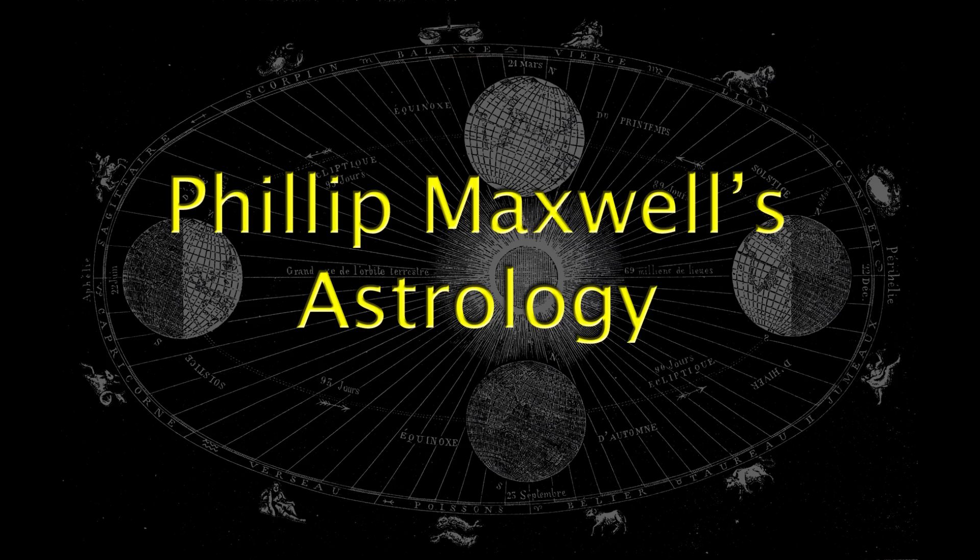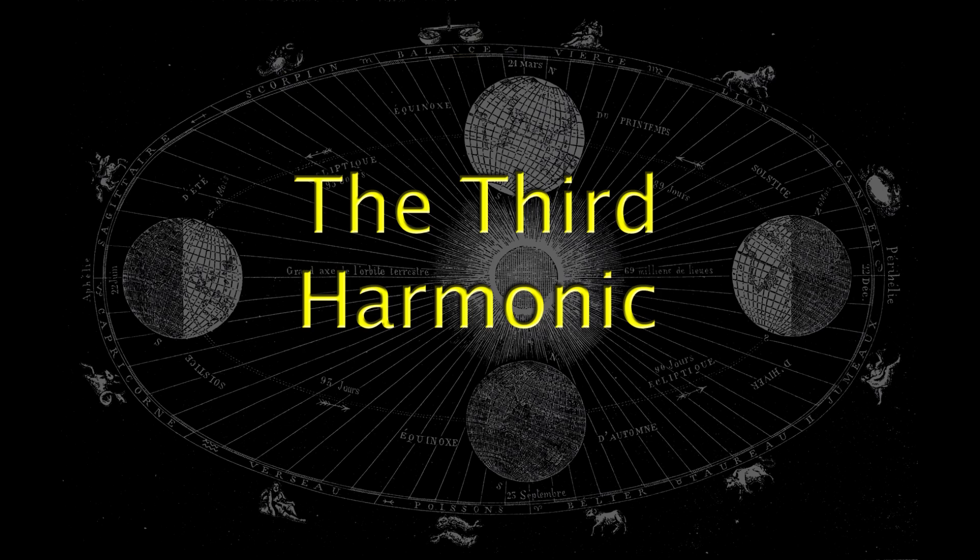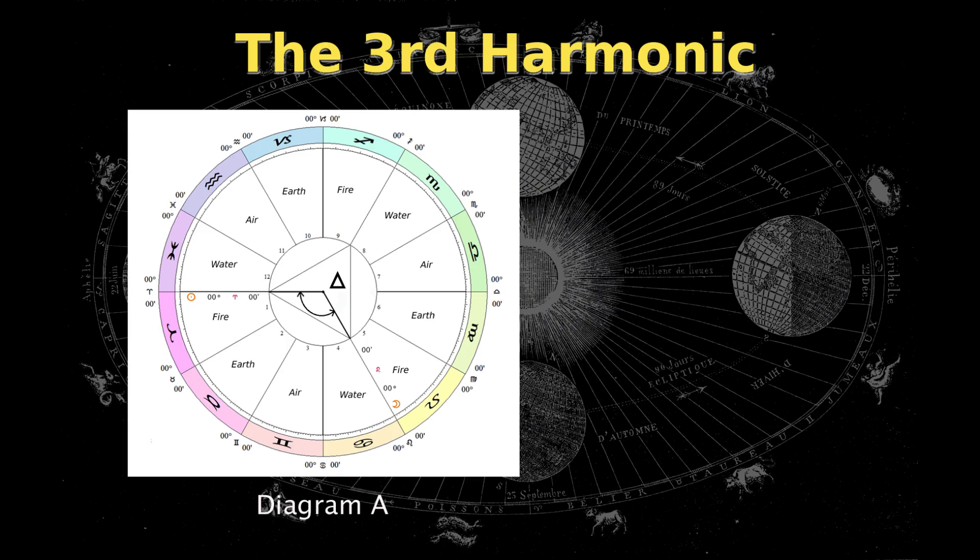Hi, I'm Philip Maxwell, and in this video we'll be discussing the third harmonic. The third harmonic happens when two planets are 120 degrees apart. It's called a trine because the angle is one-third of the circle, approximately, and its symbol is a delta.